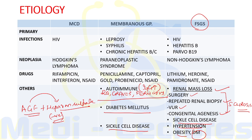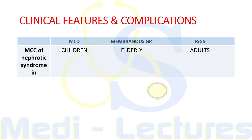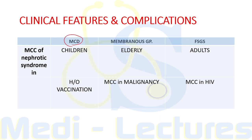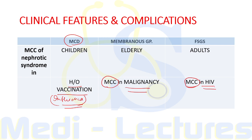Regarding clinical features: minimal change disease is the most common cause of nephrotic syndrome in children; membranous glomerulopathy is the most common cause in the elderly; and focal segmental glomerulosclerosis is the most common cause in adults. Minimal change disease can occur in patients with a history of vaccination, especially influenza. Membranous glomerulopathy is the most common type in malignancy, and FSGS is the most common type in HIV.